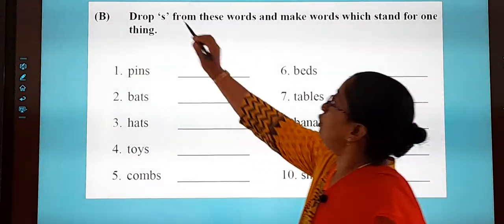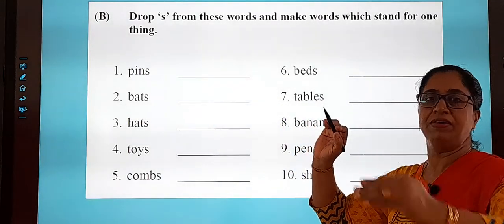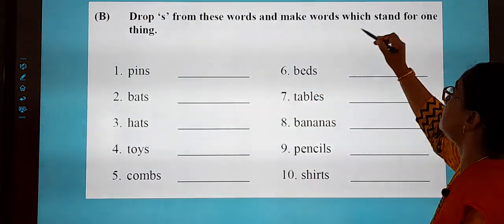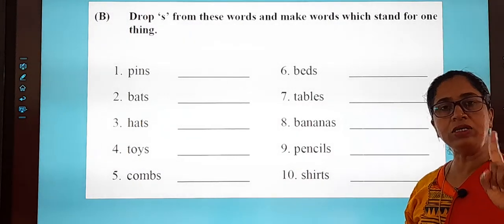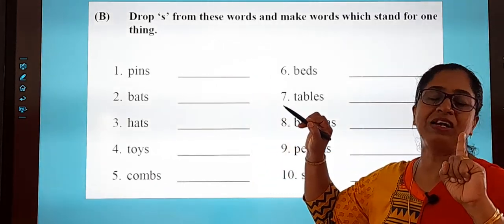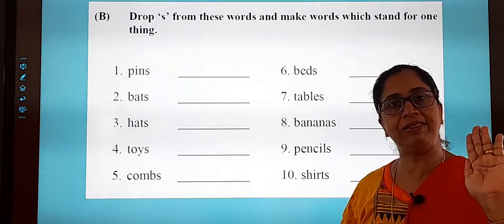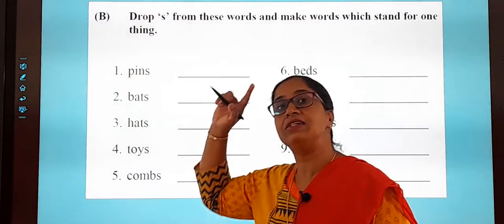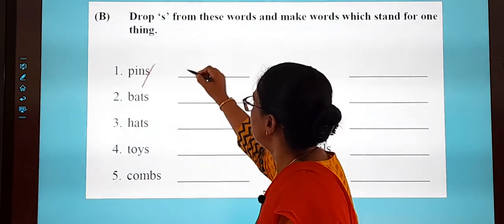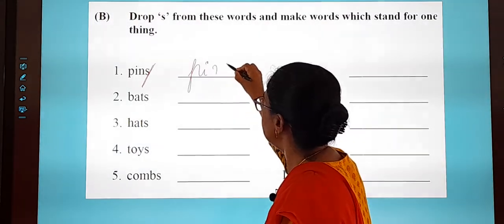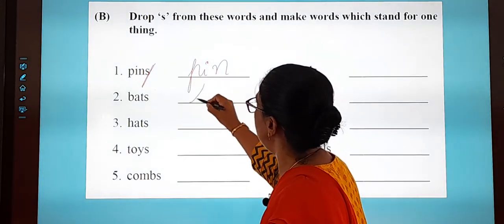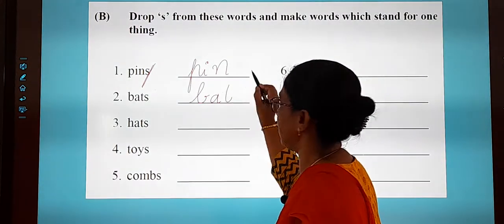Now the next part: Drop S. Drop S from these words and make words which stand for one thing. That means singular. Plural is given — we have to make singular. So for 'pins,' you will remove the S, and the singular is 'pin': P-I-N. For 'bags,' remove the S — the answer is 'bat': B-A-T. Isn't that simple?